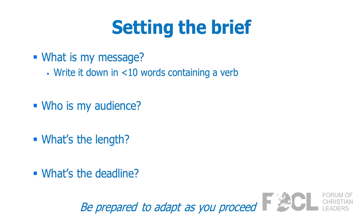The first question in setting the brief is: what is your message? Write down in ten words containing a verb what your message is. If you cannot write down the key message of your piece — whether it's a book, booklet, article, or whatever — in one sentence of no more than twenty words containing at least one verb, then you can be pretty sure that your piece will not be coherent.